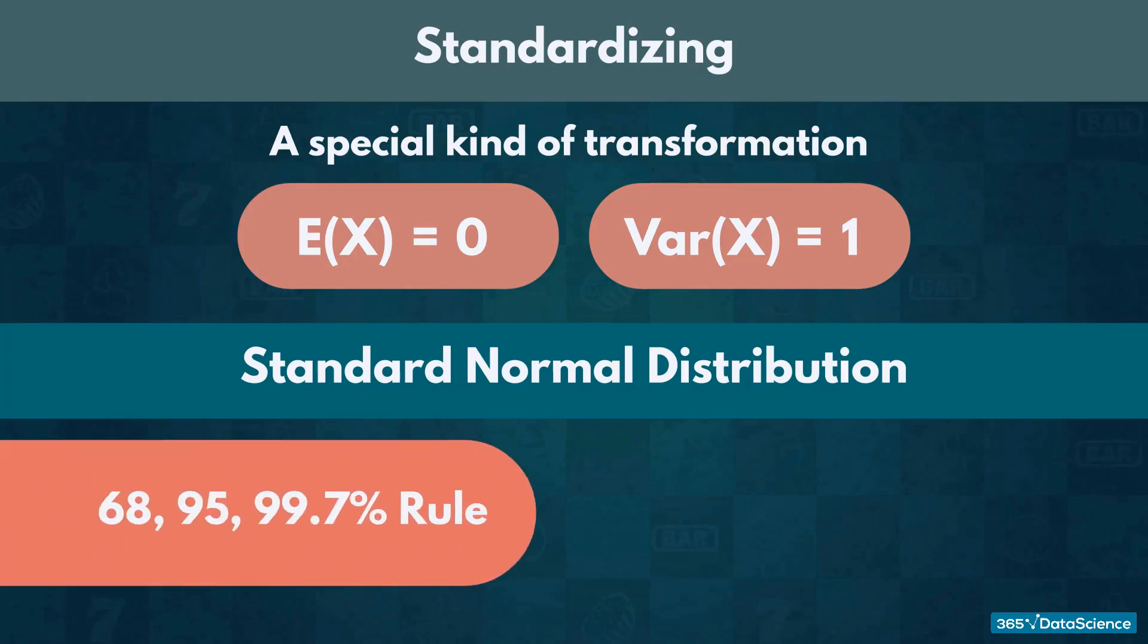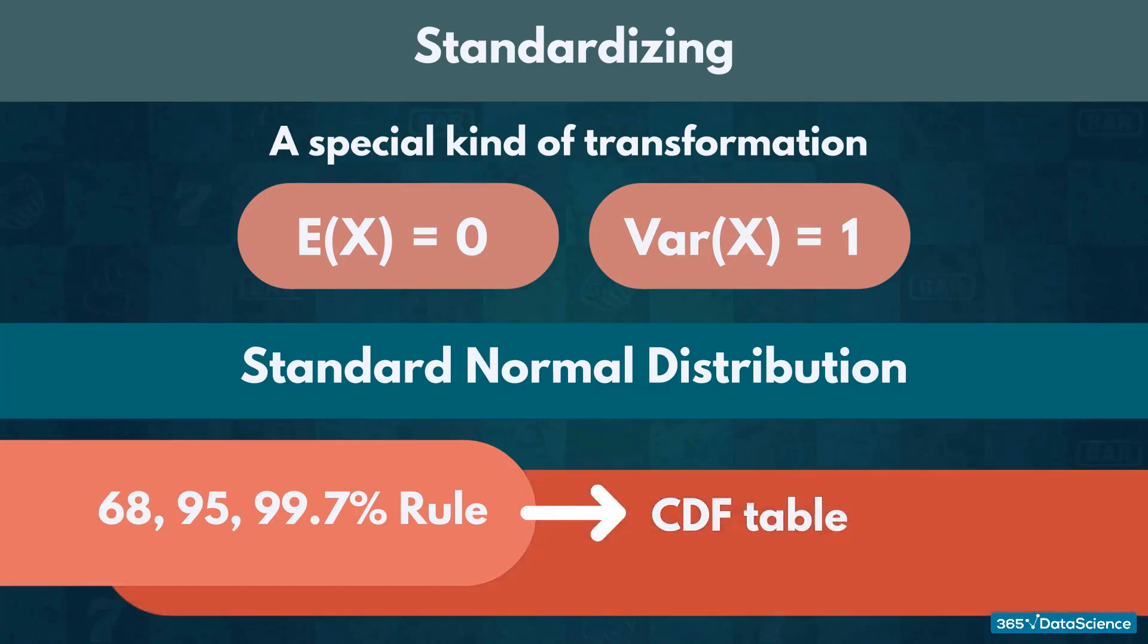In addition to the 68, 95, 99.7 rule, a table exists which summarizes the most commonly used values for the CDF of a standard normal distribution. This table is known as the standard normal distribution table, or the z-score table.